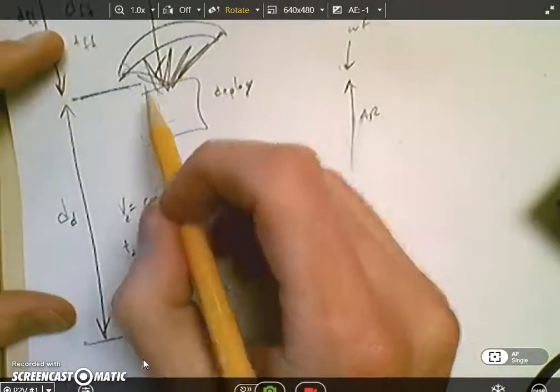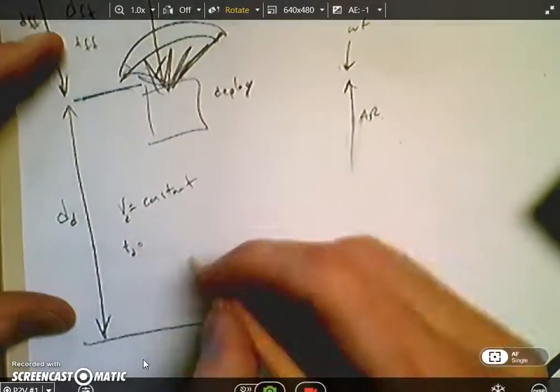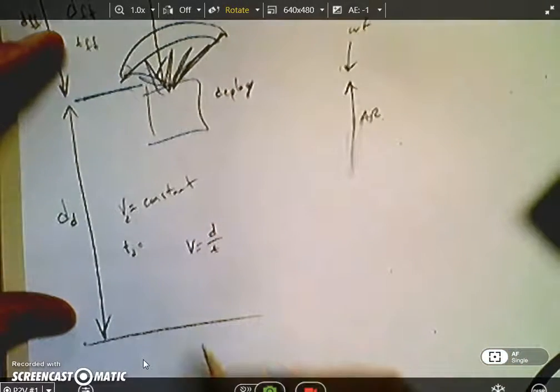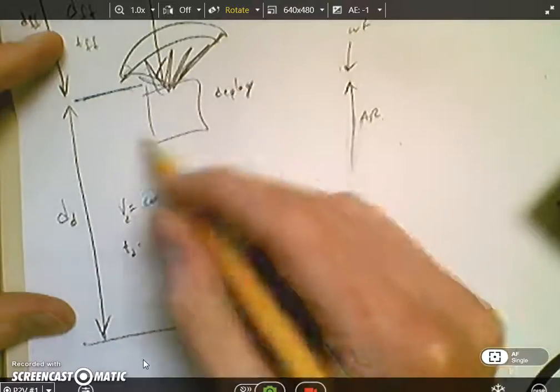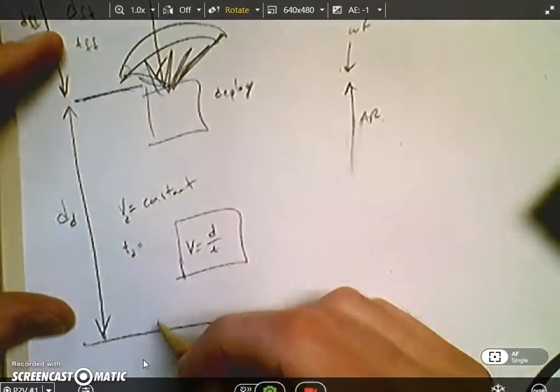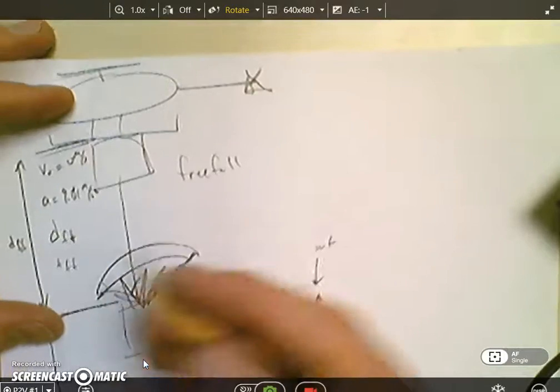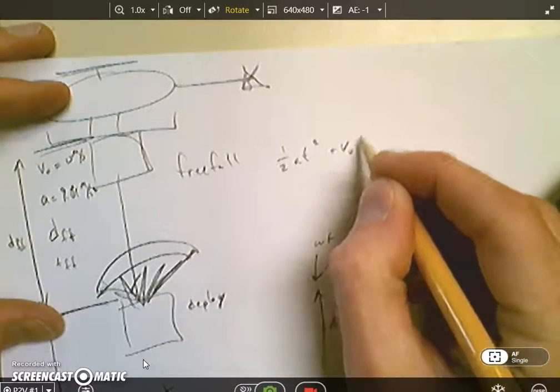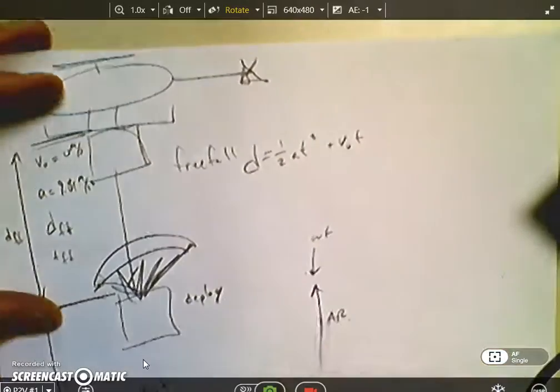The equation that governs this is that since it's moving at constant velocity it's the distance over the time. So we use this equation for this segment and this one's a little bit different. This one is ½at² plus v₀t is equal to our distance.